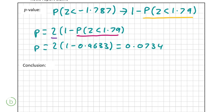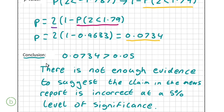For the conclusion, since the question only asks us to comment in relation to the hypothesis test, we don't need to formally state null and alternative hypotheses. Since our p-value of 0.0734 is greater than the 5% significance level of 0.05, we do not have enough evidence to claim that the news report is incorrect. Writing this conclusion with your correct p-value gets you the full 10 marks.